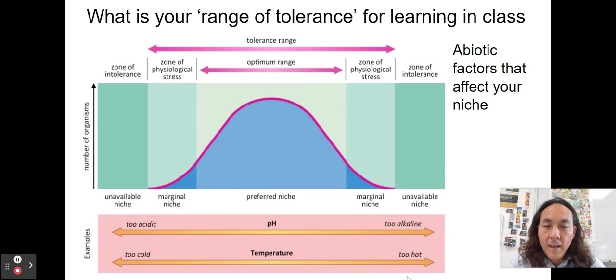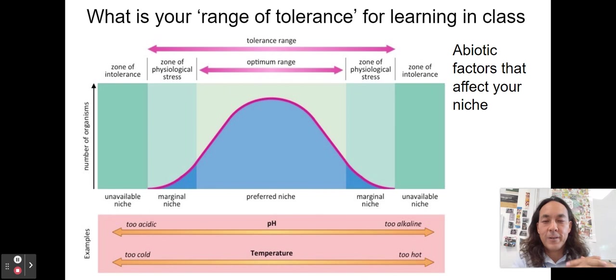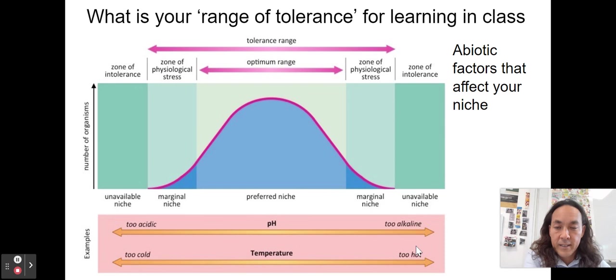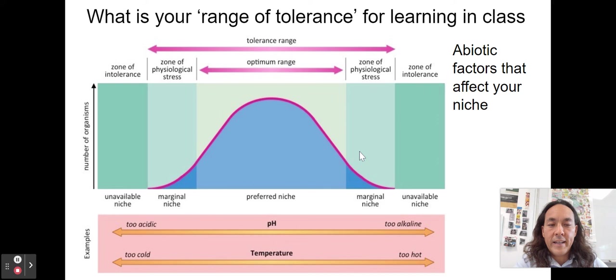The range of tolerance refers to abiotic factors that affect your ability to live. For fish, they have a preferred pH and temperature. If it gets too hot, they get stressed; way too hot, they die — their proteins cease functioning. Too cold, they get stressed; way too cold, they die. Too basic or too acidic, they die. This range of tolerance affects how many of that species can grow in an area or where they can live.